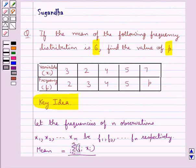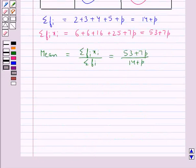In the question we are given that the mean of the frequency distribution is 6. So we have 53 plus 7p upon 14 plus p is equal to 6 since we are given the mean equal to 6.